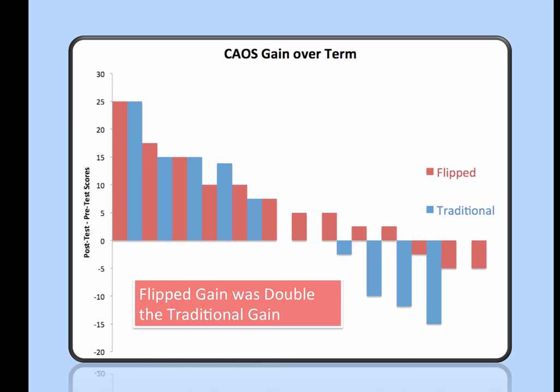That difference is disconcertingly negative for some students. We're really hoping that's due to variability and not actual loss in knowledge, and we think that's true because it happened in other studies as well.